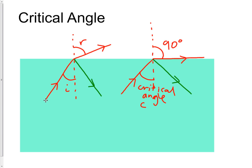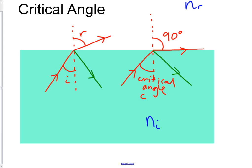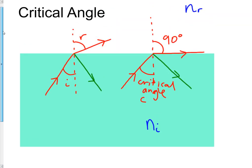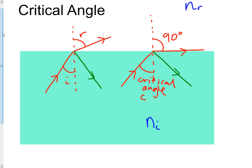We're interested in finding a formula for the critical angle. That depends on the refractive index of the incident medium and the medium you're going to. If we're going from glass to air, NI is the refractive index of the glass, and NR is the refractive index of the air. The formula for Snell's law is NI sin I equals NR sin R.